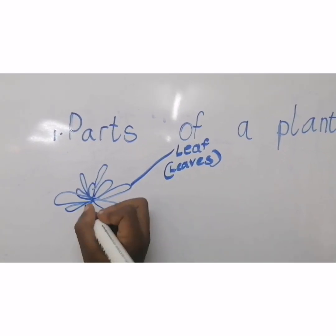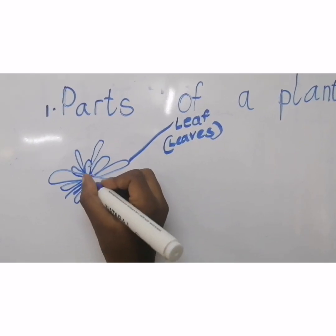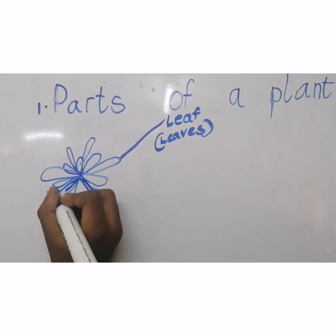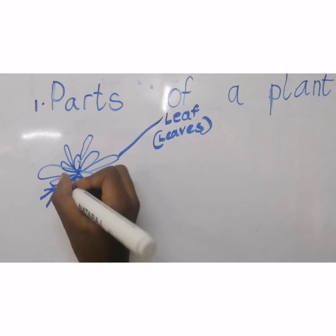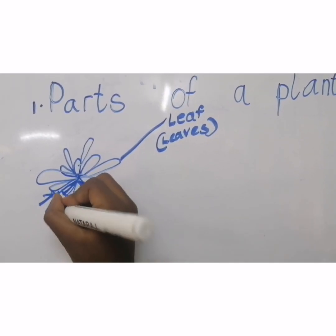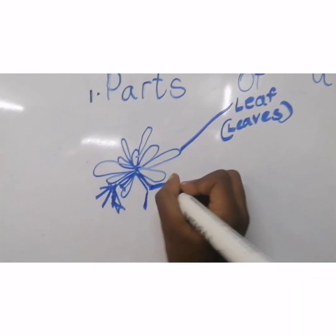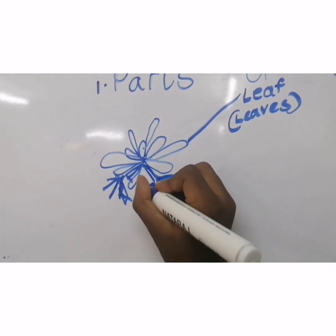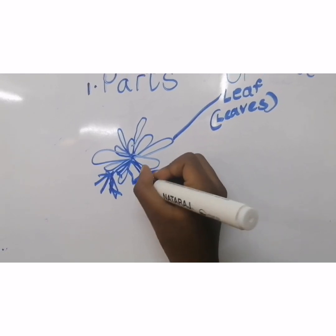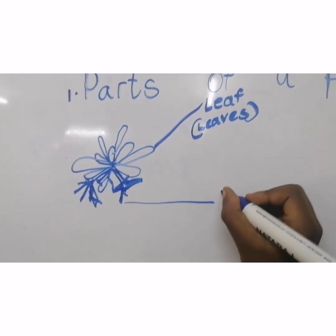And now next are the branches. They are right below the leaves — singular leaf. And each branch of a plant sticks to the leaves. So these are called the branches of a plant.